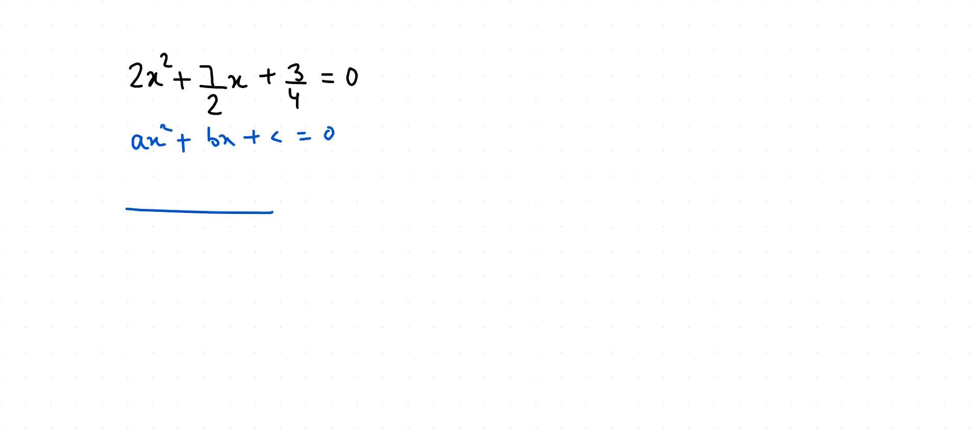So it becomes 4x² + 14x + 3 = 8. 8x² + 14x + 3 = 0. Now I am going to multiply with 4 both sides.